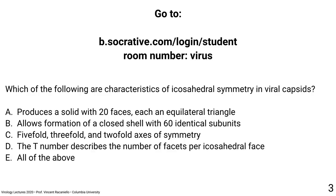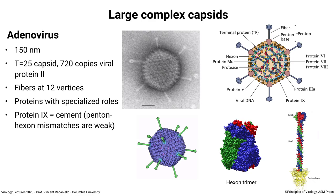The answer to the question about icosahedral symmetry is all of the above: it produces a solid with 20 faces each an equilateral triangle, allows formation of a closed shell with 60 identical subunits, has 5-, 3-, and 2-fold axes, and the T number describes the number of facets per icosahedral face — all correct. Now let's talk about making bigger viruses. Here are adenoviruses — 150 nanometers. This is a T equals 25 with 25 subunits per face of the icosahedron. Here's an electron micrograph in the middle — you can see the icosahedral symmetry, and there are fibers sticking out at each of the 12 five-fold axes.